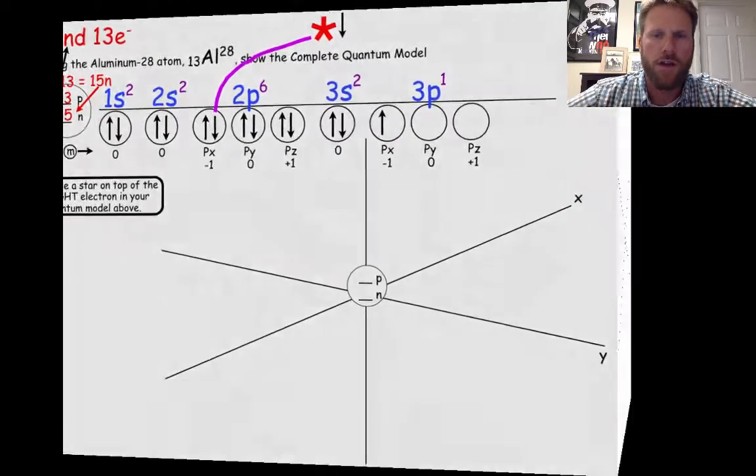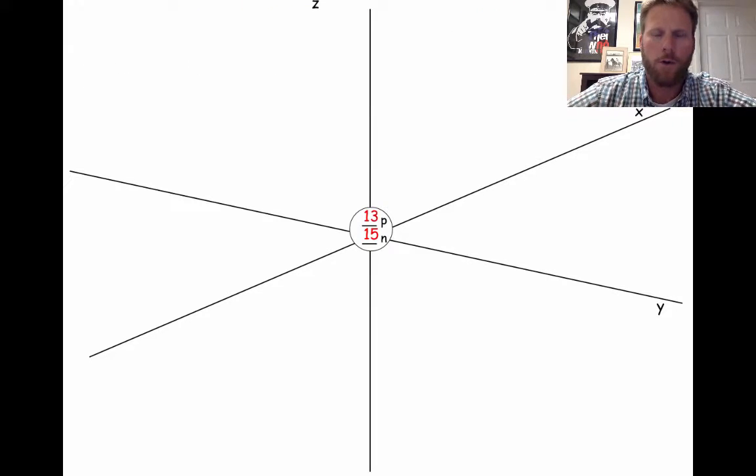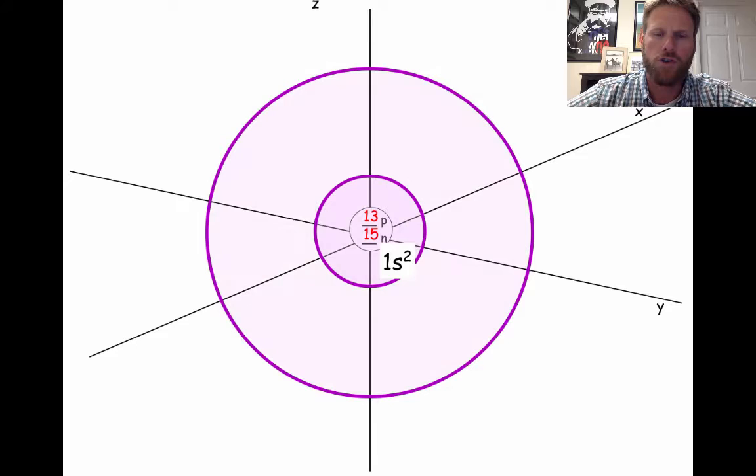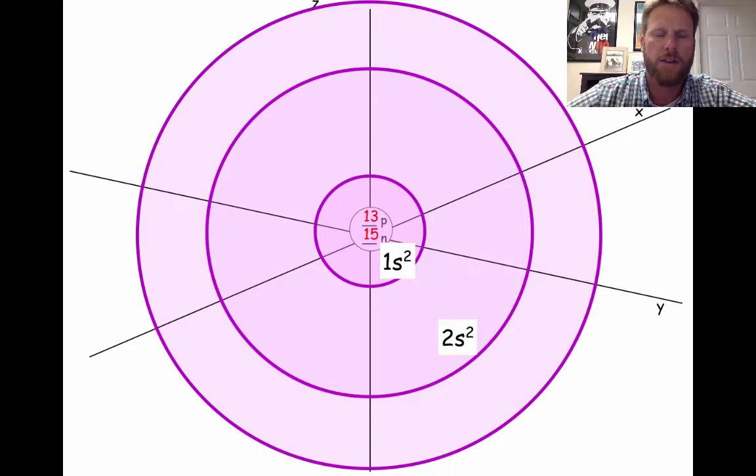When we draw this, we'll start by labeling our nucleus with the protons and the neutrons. Then we'll label our 1s orbital, 1s2. And then a little bit larger, 2s orbital, 2s2. And then we also have a 3s orbital. So let's get all the s orbitals out of the way. That is also 3s2.